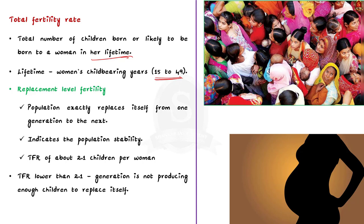Replacement level fertility is the level of fertility at which a population exactly replaces itself from one generation to the next. This replacement level fertility also indicates population stability. A total fertility rate of about 2.1 children per woman is called replacement level fertility — the rate at which population stability is achieved.